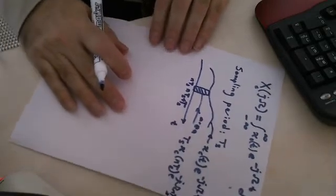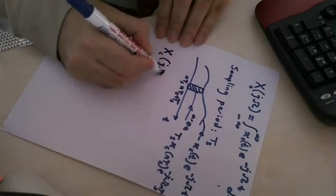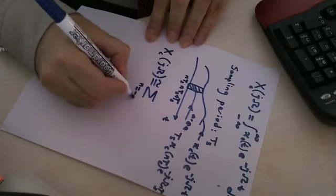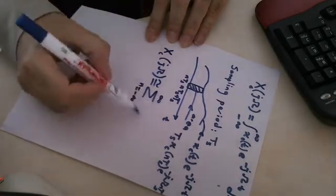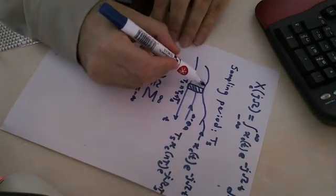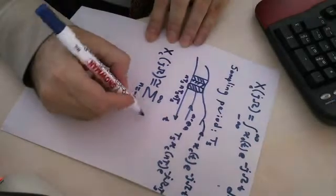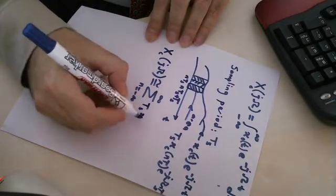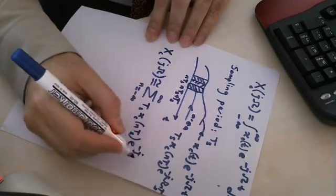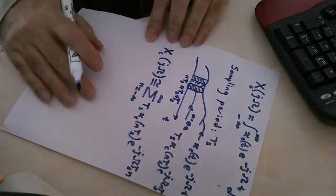Therefore, this integral, XC of J omega is approximately equal to summation N from minus infinity to plus infinity of TS times XC NTS e to the minus j omega N times TS.